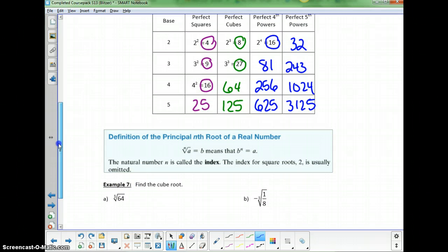For a cube root of 64, I have perfect cubes. 64 is the perfect cube of 4, so the cube root of 64 is 4. 4 to the third power is 64.